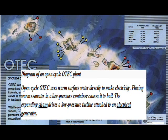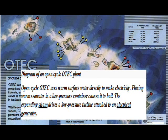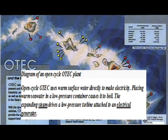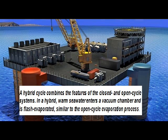In a closed cycle OTEC plant, the system uses a fluid with a low boiling point, such as ammonia, to power a turbine to generate electricity. Warm surface water is pumped through a heat exchanger to vaporize the fluid. The expanding vapor turns the turbo-generator. Cold water is then pumped through a second heat exchanger to condense the vapor back into liquid, which is then recycled through the system.